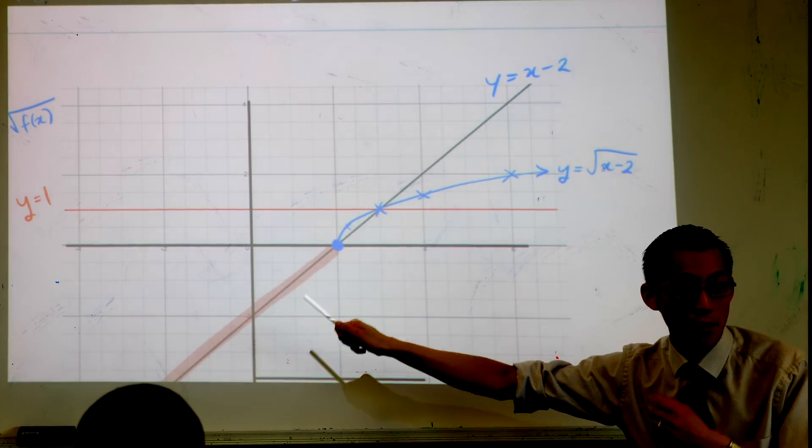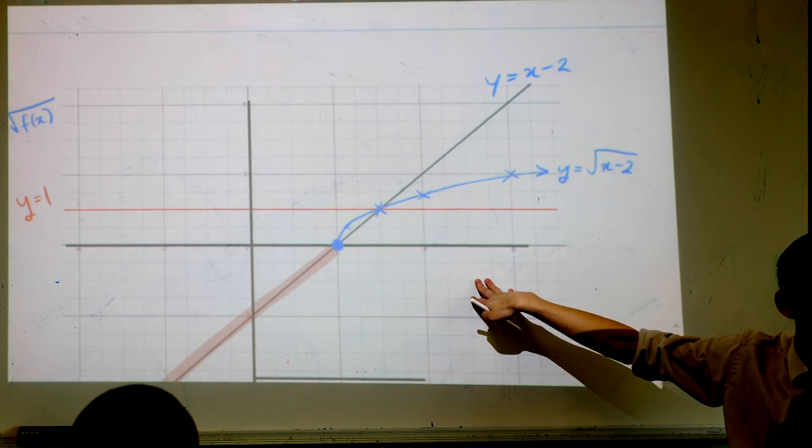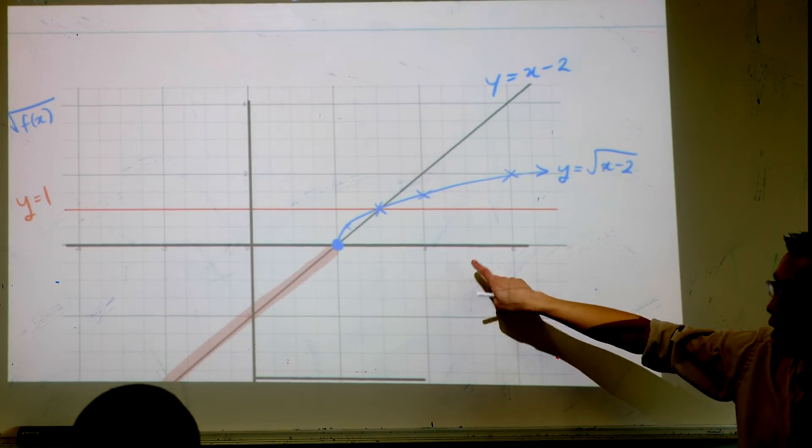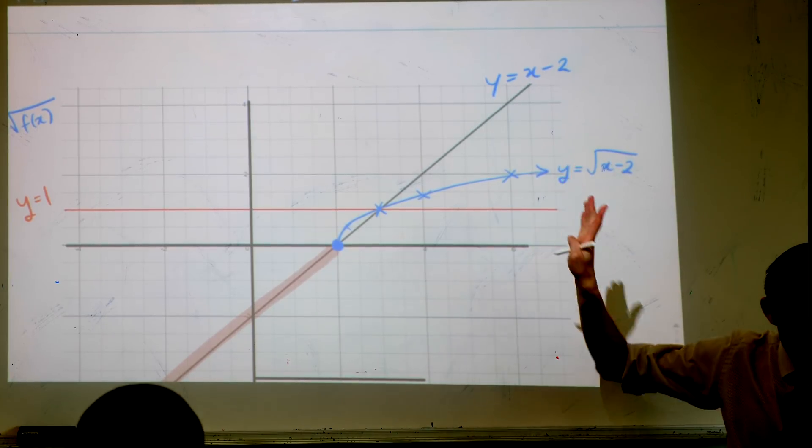And it's half of a sideways parabola. It's just the positive half. Why don't I have the other side down here? Yeah, see this square root here, right? It can only be the positive part. So that's what the shape is.